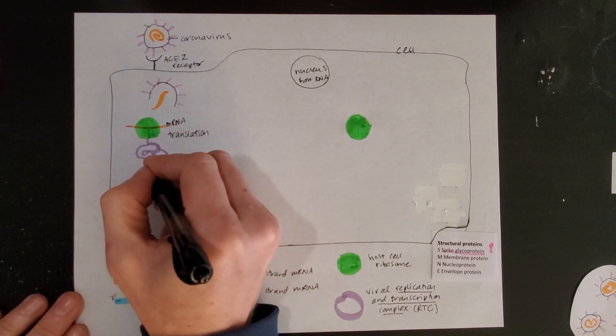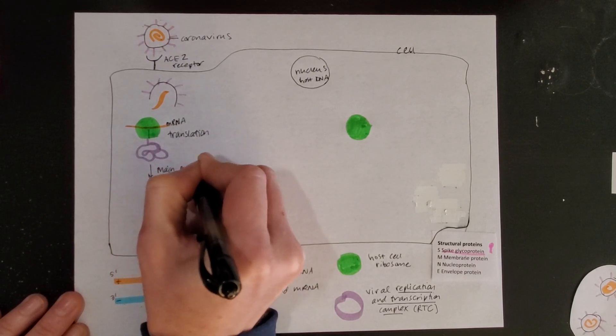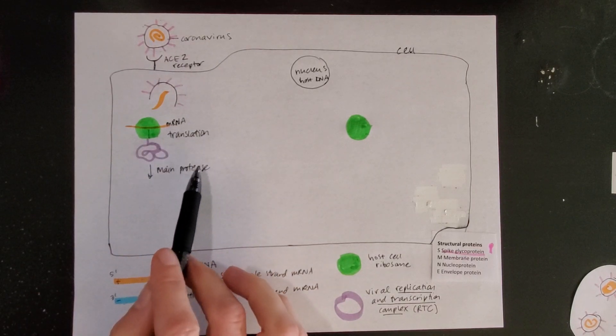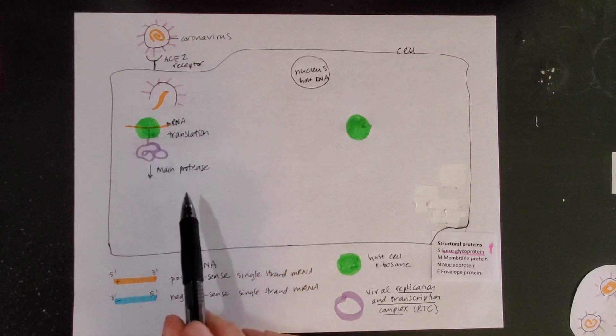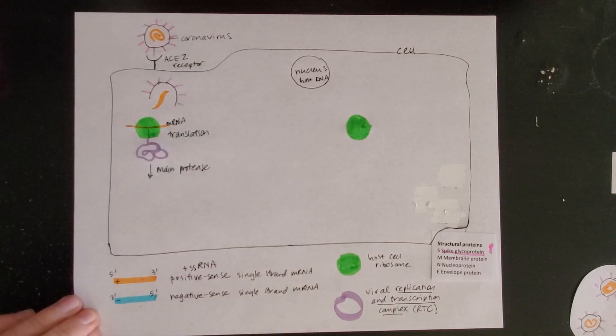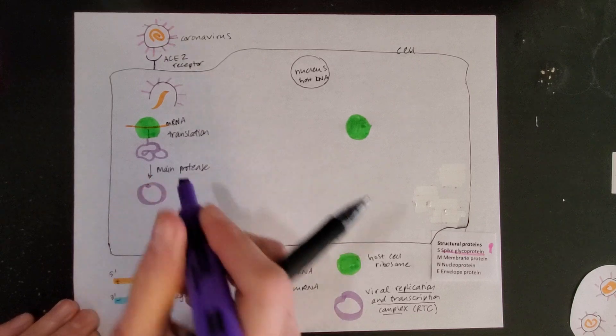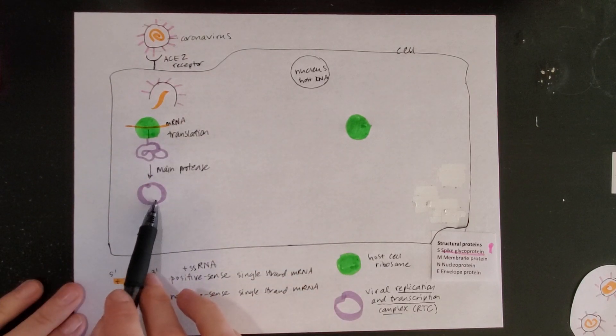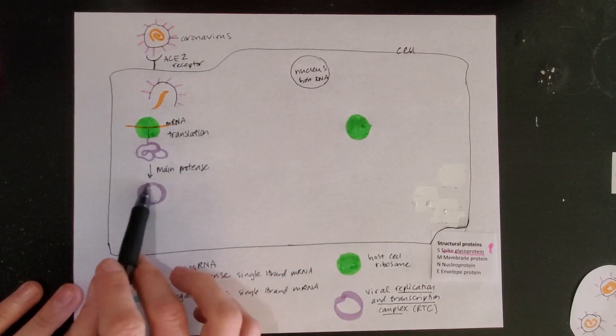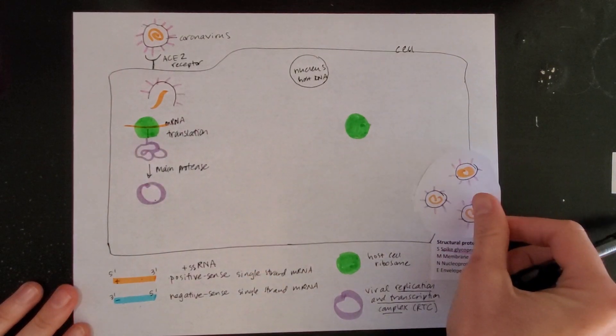Those two polyproteins are then processed by what's called the main protease. That is a protein cutting enzyme that is also coded for by this mRNA. That main protease takes these two polyproteins and cuts them into many more smaller proteins and assembles them into what we call the replication and transcription complex. This is now going to be the crucial machinery to help make more coronaviruses.